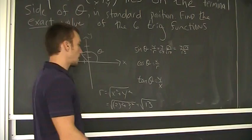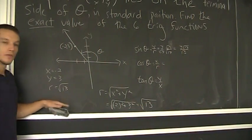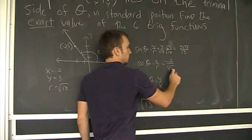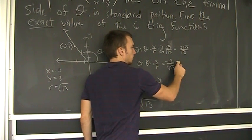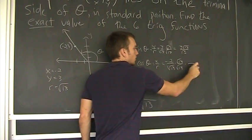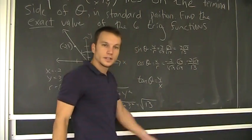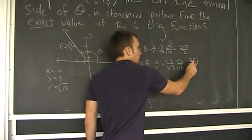Okay? Cosine theta, x over r. Negative 2 over root 13. Multiply by root 13 over root 13. Root 13 times root 13 is 13. Negative 2 times root 13. That's my answer for cosine.